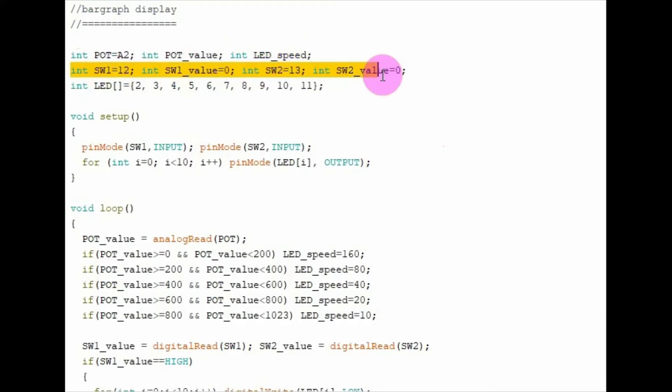These variables here are associated with the two switches. This one dimensional array is used to assign the pin values to the 10 LEDs of the bar graph.